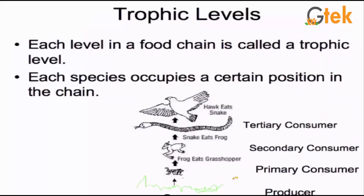Let us talk about a trophic level. Each level in a food chain is called a trophic level. Each species occupies its specific position in the chain. You can see the producer, primary consumer, secondary consumer, and tertiary consumer in a trophic level.